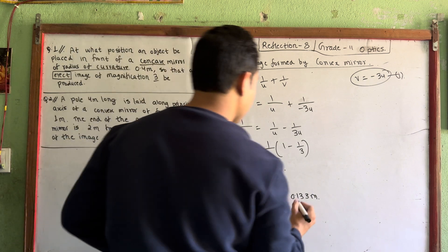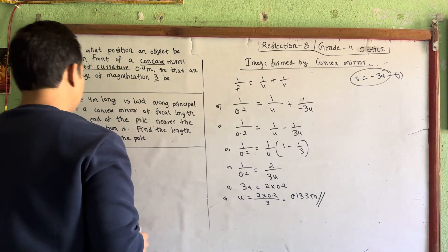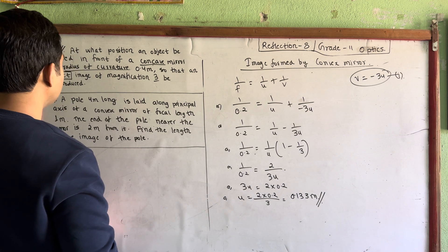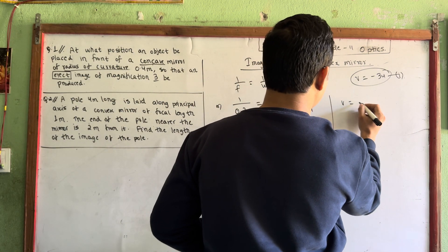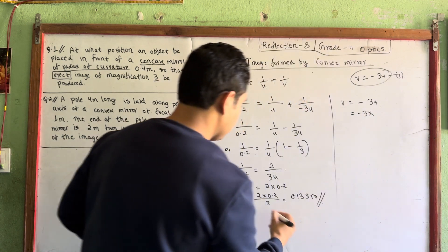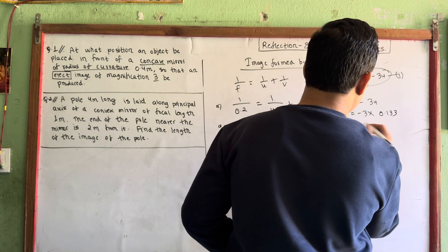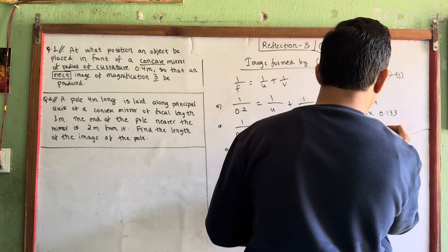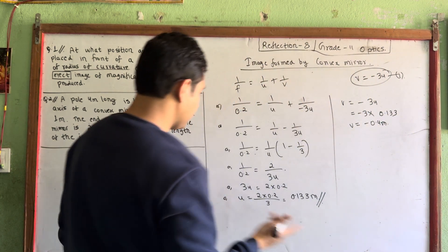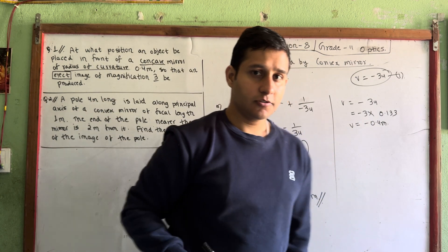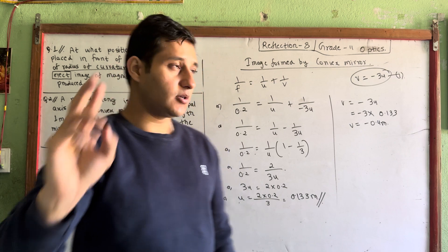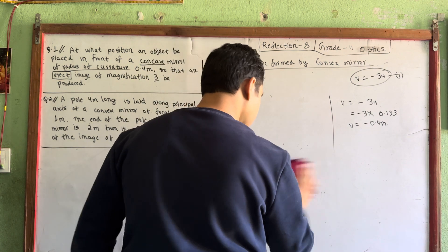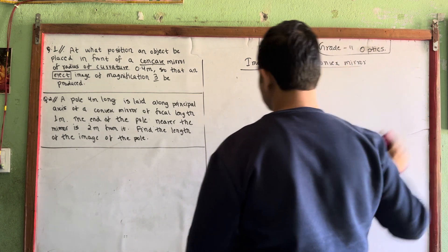So u = 0.133 meter. The position of the object is 0.133 m. Now for v: v = minus 3u = minus 3 times 0.133 = minus 0.4 m. So u is positive and v is negative. We have solved this numerical using the mirror formula and magnification formula.